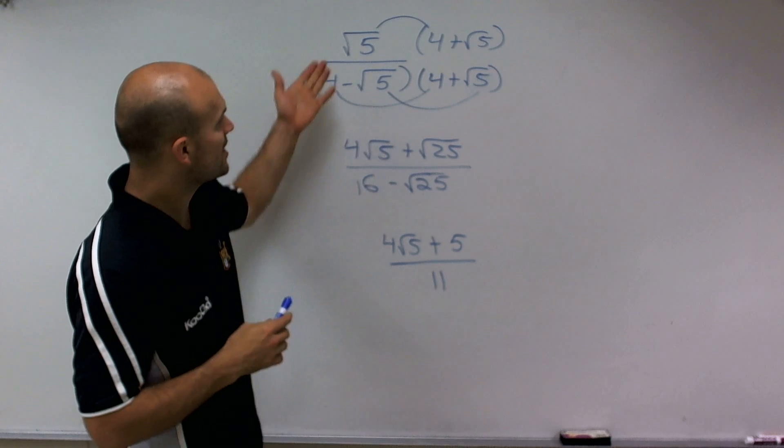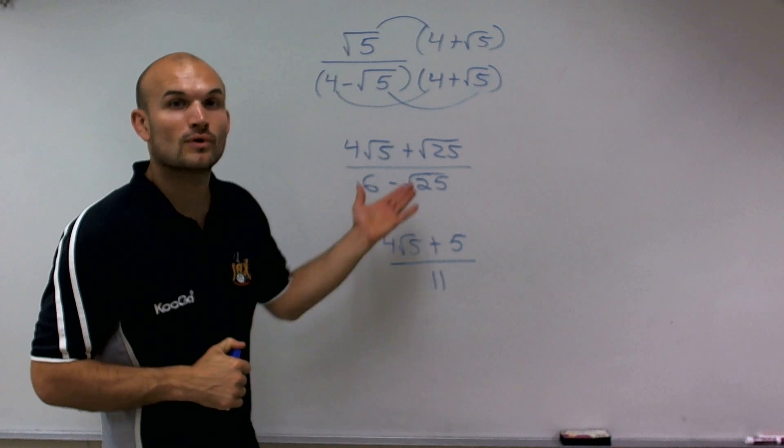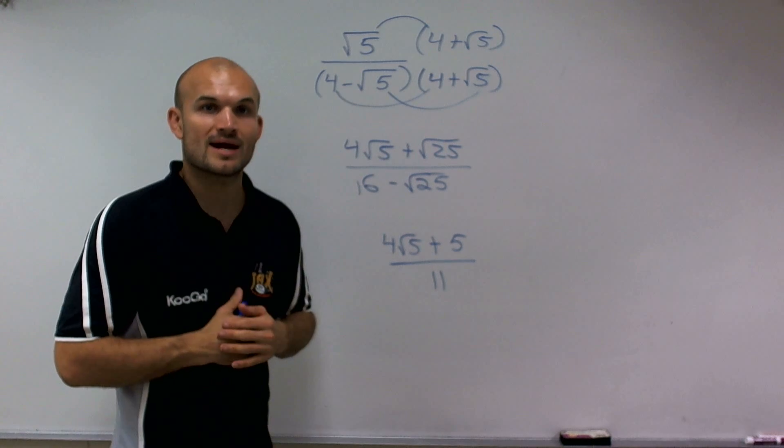And there you go. That is how you want to simplify when you're dividing by a binomial with a radical expression. Thanks.